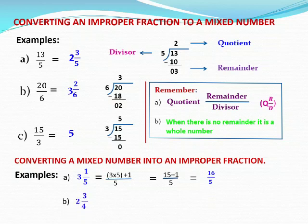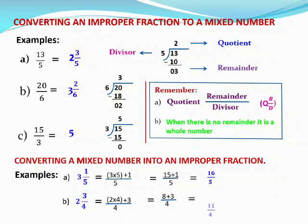Next question B: 2 and 3 by 4. What we have to do first? We have to multiply 2 and 4. Then that product we have to add with 3. So 2 times 4 plus 3, then write the denominator as same — 4. 2 times 4 is 8, plus 3 gives 11 by 4. So the answer is 11 by 4.